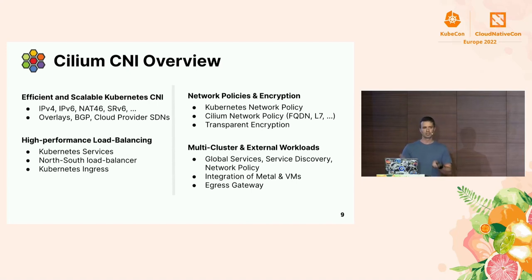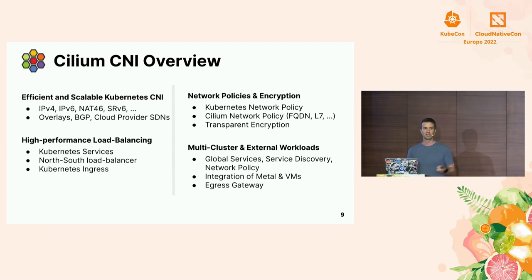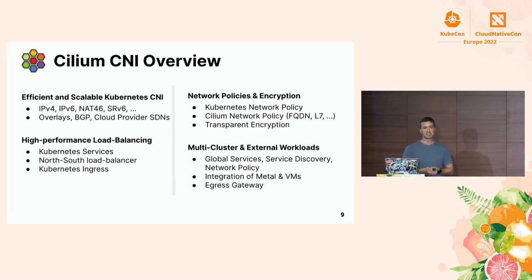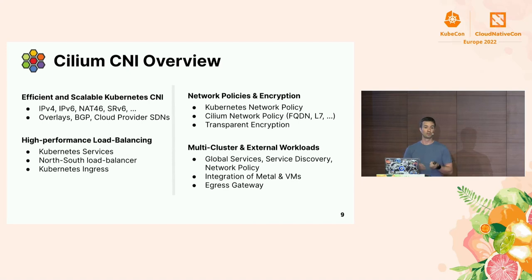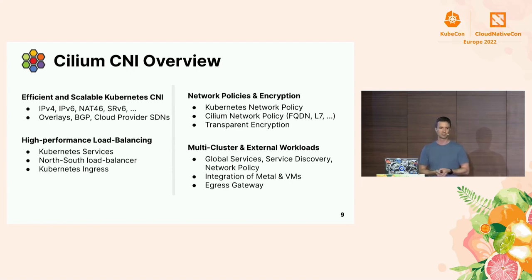Widely popular is also multi-cluster and external workload support. We can connect clusters together using standard Kubernetes resources — no additional CRDs needed. You can use Kubernetes services to define global services and do service discovery across multiple clusters, with network policies working as well. Egress gateways allow you to represent pod traffic behind stable source IPs, making life easier for traditional network firewalls. Cilium can also run on virtual machines and bare metal machines, integrating external machines into your Kubernetes from a network perspective.